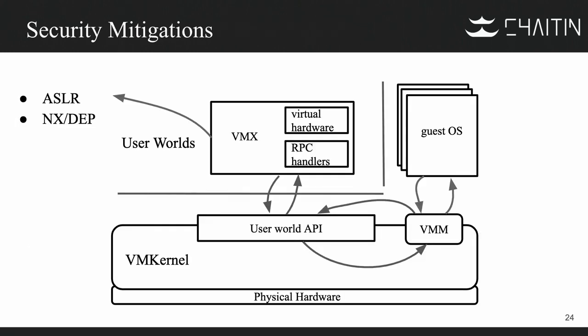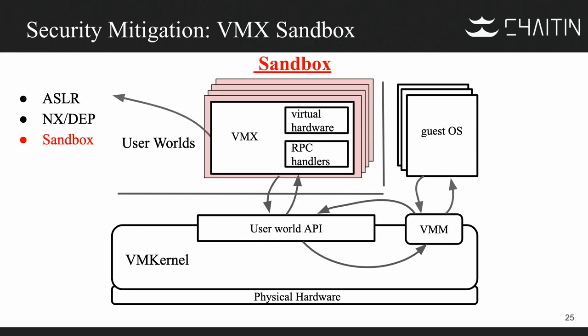Thirdly, there are some security mitigations including ASLR and NX. It means we may need to leak some address information before starting our exploit to break the address space randomization. Furthermore, after testing, we found there is another mitigation on the ESXi — there is a sandbox that isolates the VMX process. So even if you can execute shellcode in the VMX process, you cannot execute any commands or read any sensitive files unless you escape from the sandbox as well.